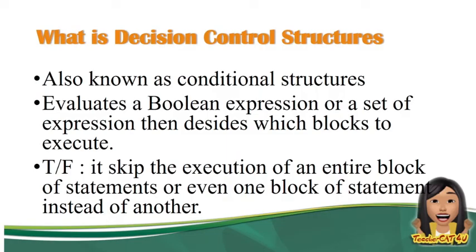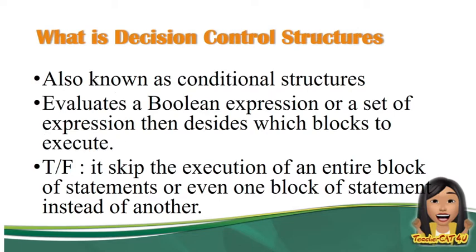So what is decision control structure? The decision control structure is also called conditional structure. What it does is, first, it evaluates the boolean expression or the conditional expression, then decides what blocks or what statement will be executed. So decision control structure is answerable by true or false. It skips the execution of an entire block of statement or one block of statement instead of another.